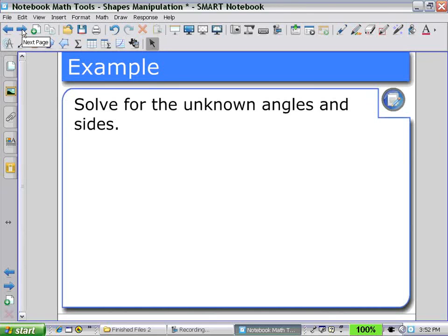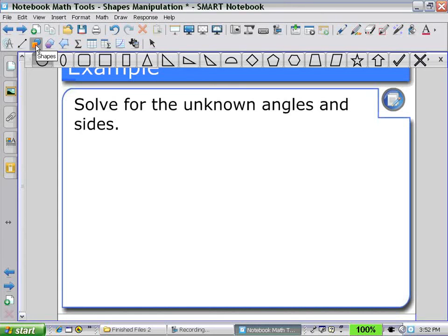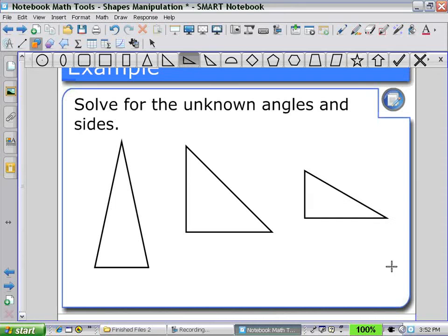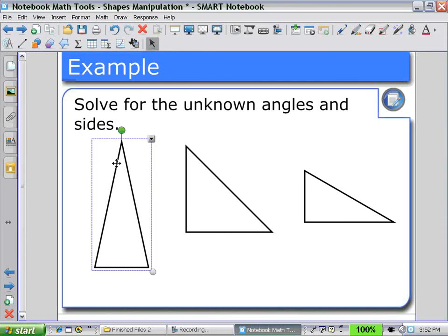Another example that may be set up is to solve for unknown angles and sides of triangles. So here we use our shapes tool and we can create a series of triangles, an isosceles triangle, some of our special triangles, and then we could select these and show our interior angles as well as our side lengths for each of these triangles.